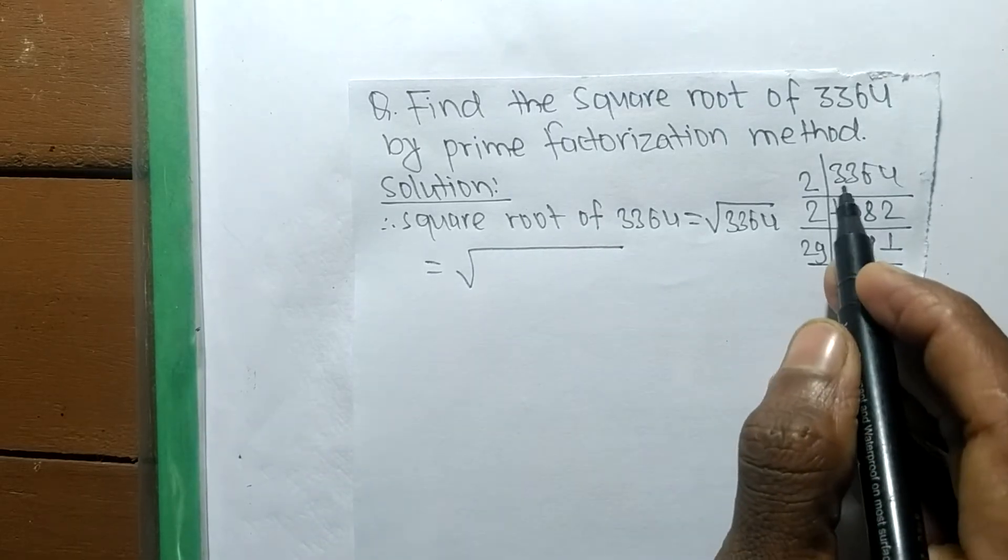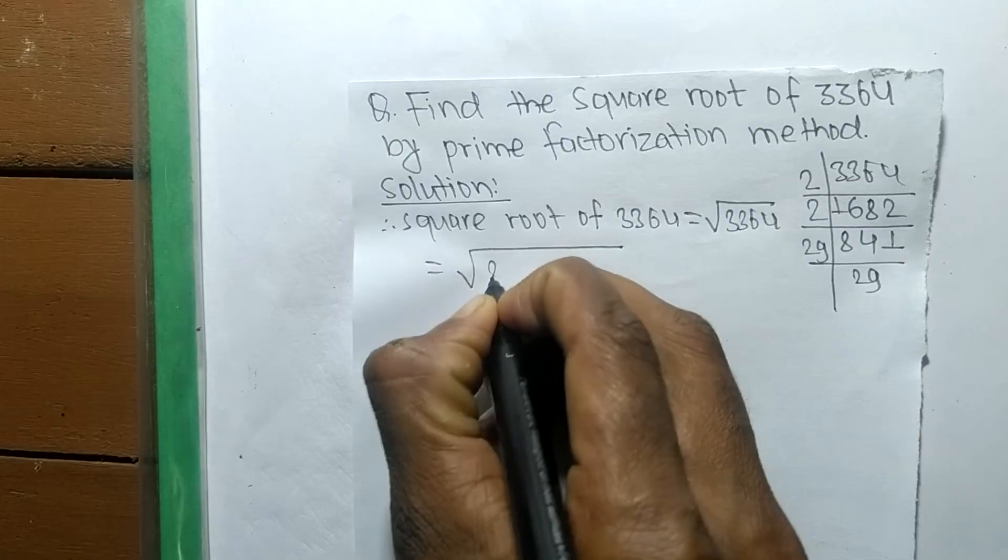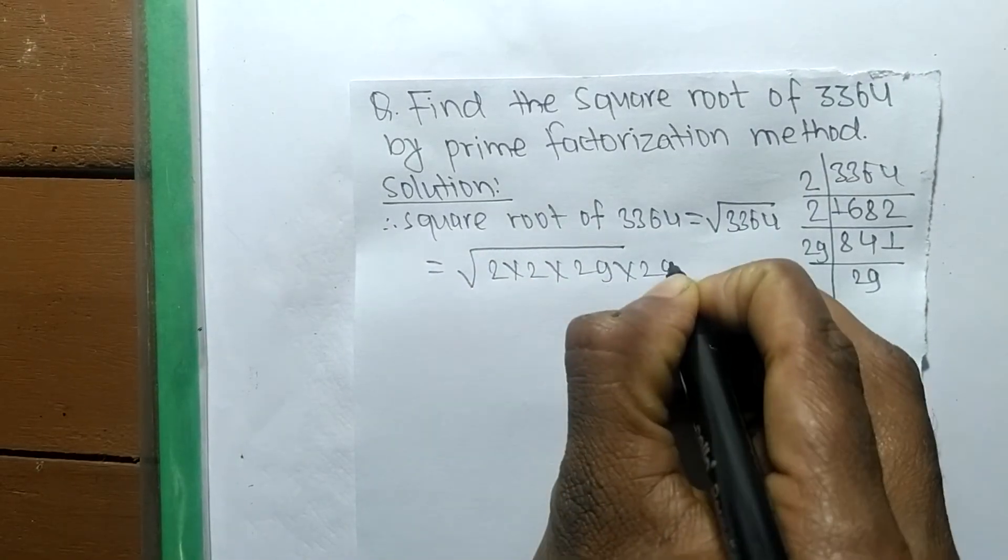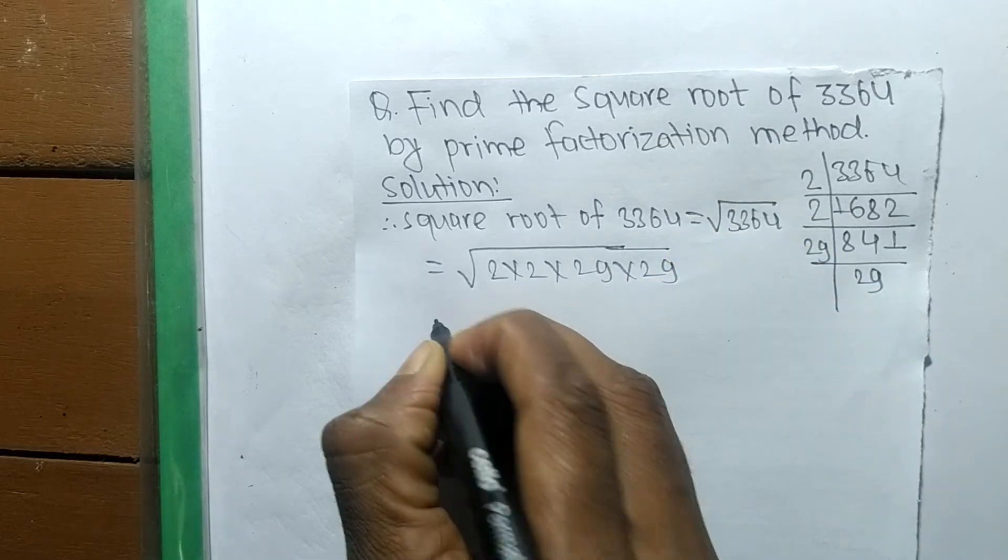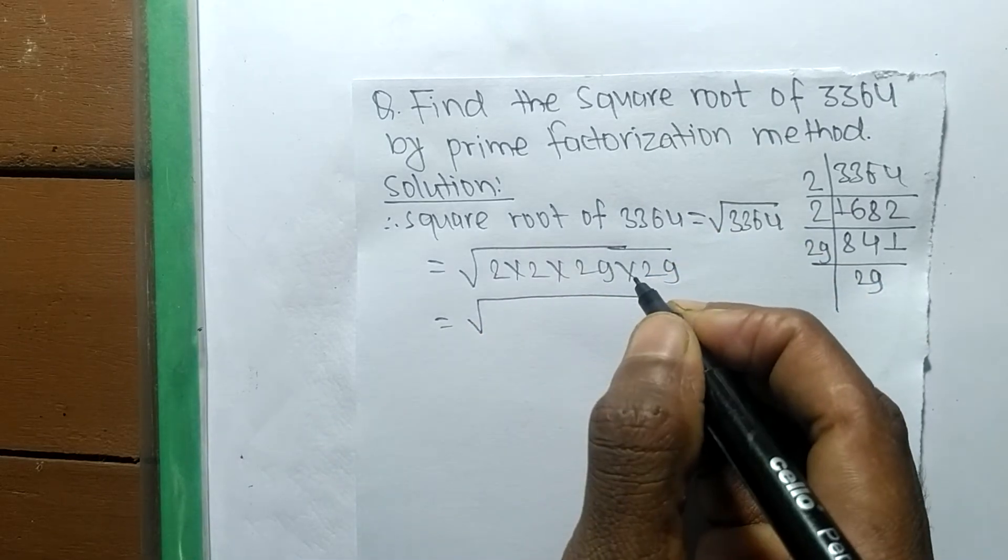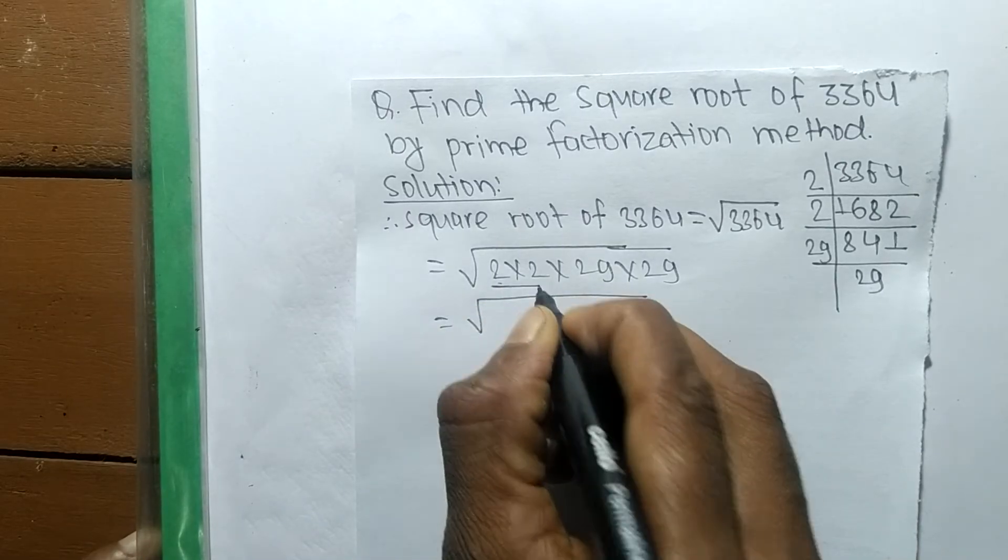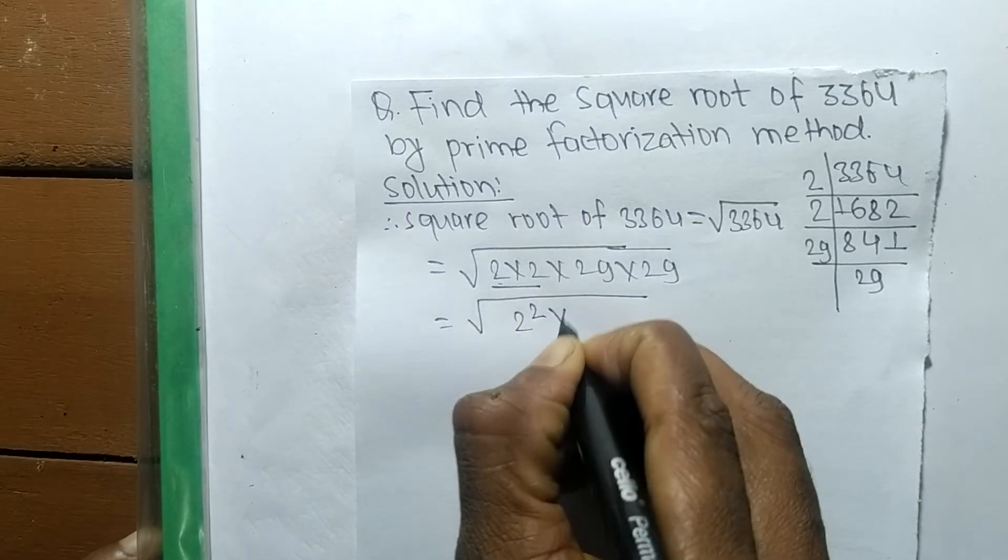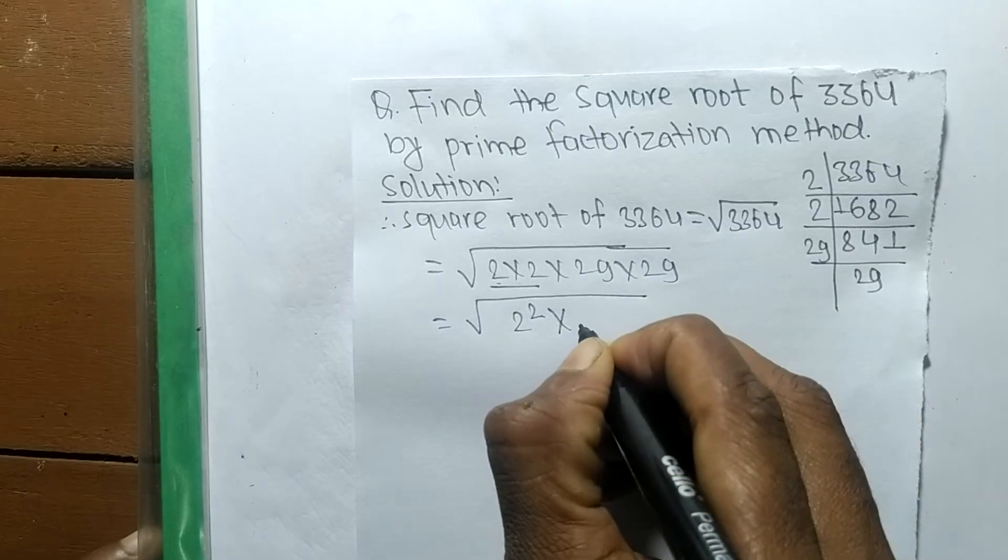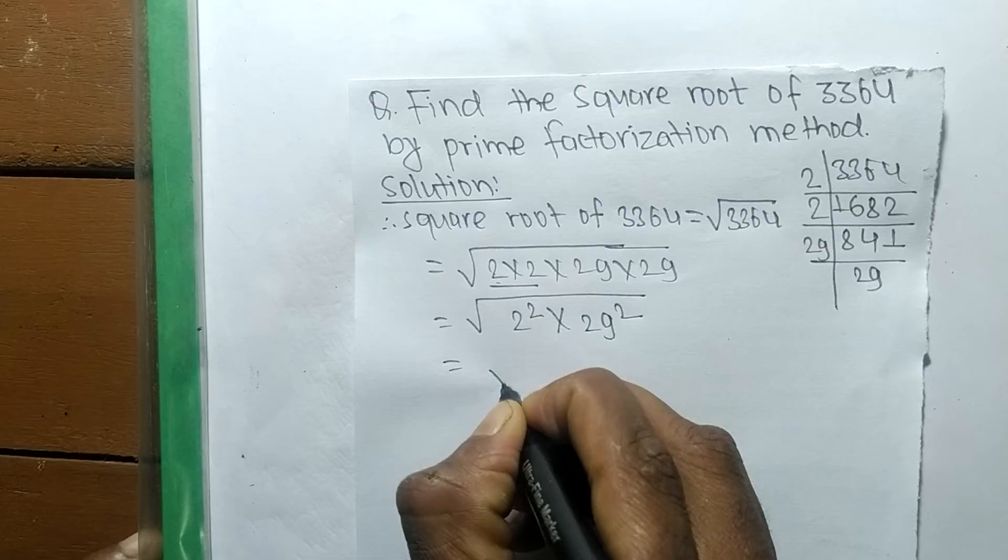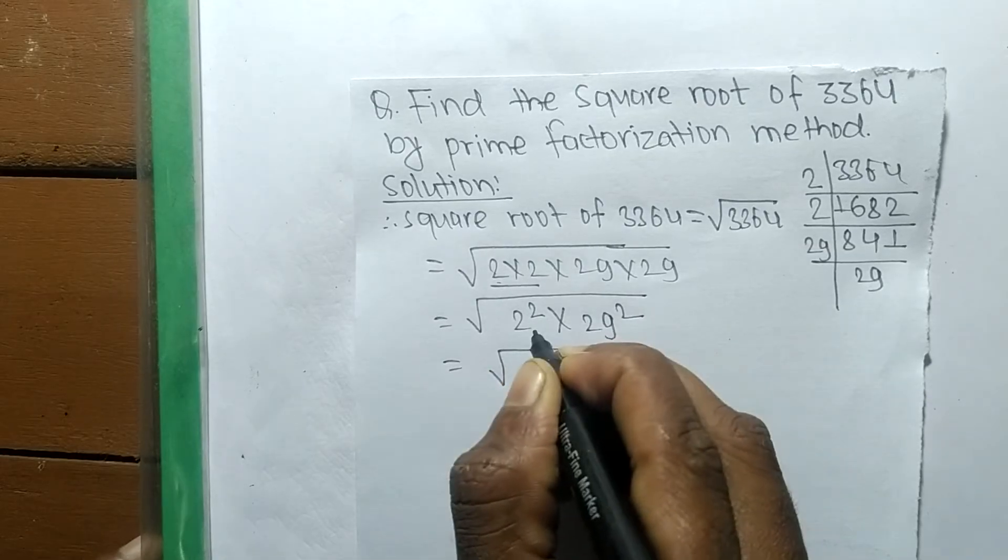It is equal to the prime factors of 3364, so it is 2 into 2 into 2 into 2 into 29 into 29. After writing the prime factors of the given number, now we make it a square. 2 into 2 means it is 2 squared. 29 into 29 is 29 squared.